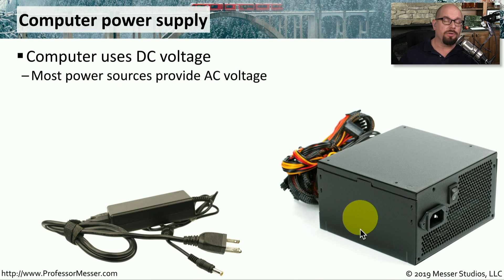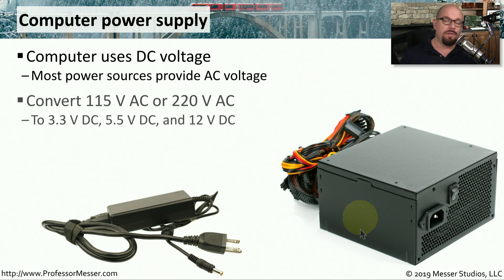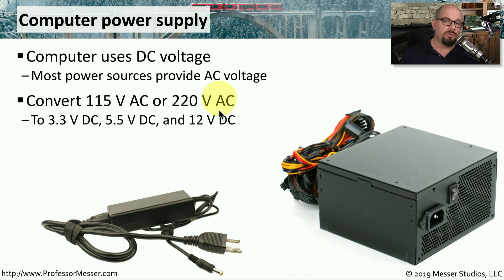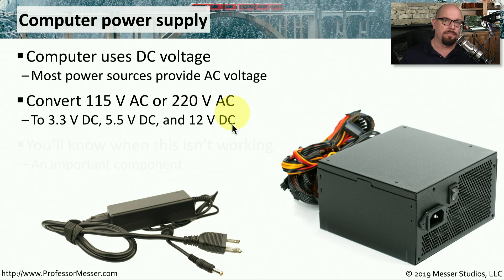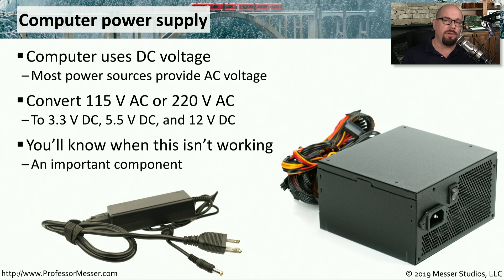Your computer or your laptop uses DC power, direct current, to be able to operate. But the power coming out of your wall outlet is probably alternating current, or AC. We use power supplies to convert 115 volts AC, or 220 volts AC depending on where you live in the world, into something your computer can use — most often 3.3 volts, 5.5 volts, and 12 volts of DC power. This is one of the most important components in your computer. If your power supply isn't working, some or all of the components in your computer will fail to work as well.